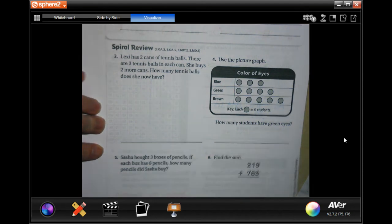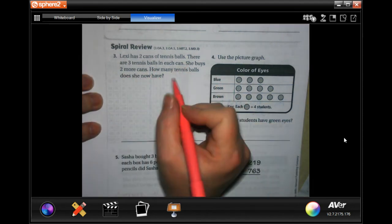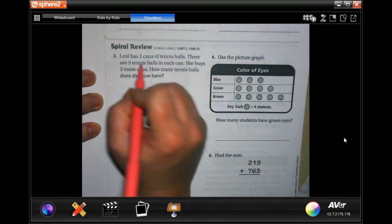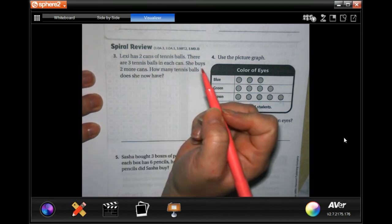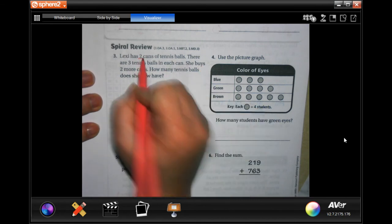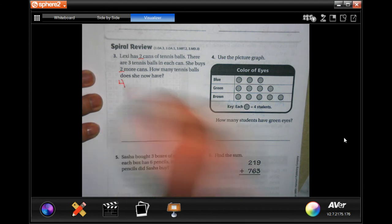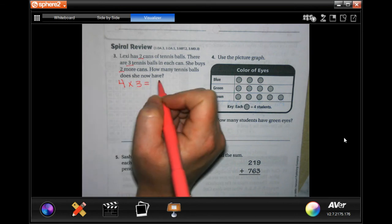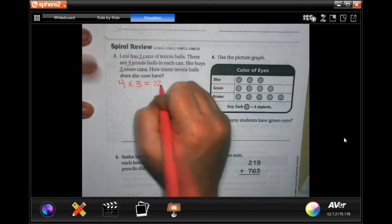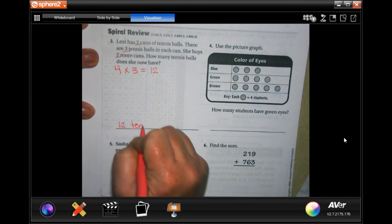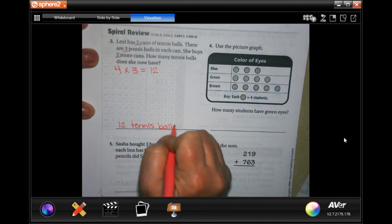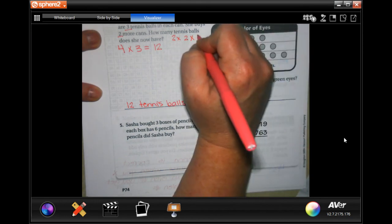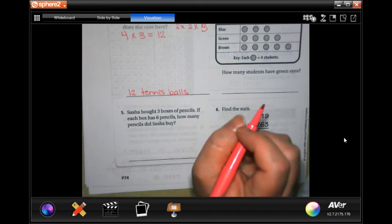It says Lexi has two cans of tennis balls, there are three tennis balls in each can. She buys two more cans. How many tennis balls does she have now? So she has two cans, she bought two more cans, so that's four cans. There's three in each one, that would be 12 tennis balls. You absolutely could have done the two cans add with two more cans, multiplied it by three, you absolutely can do that if you want to. I just did the two and two and got four.